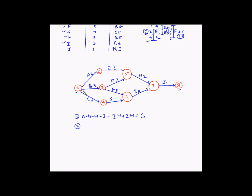From node three we have two paths. Taking activity E first, the second path is B-E-H-J, with durations 3 plus 2 plus 2 plus 1, which equals 8 days.